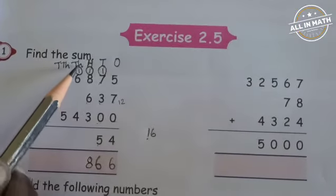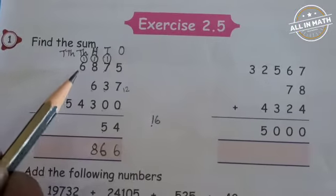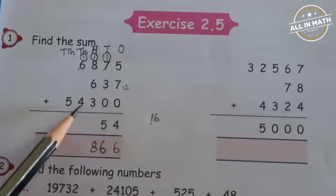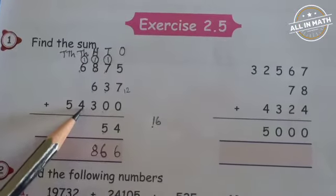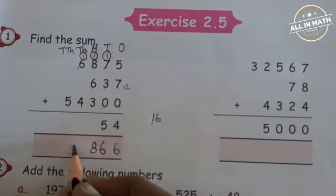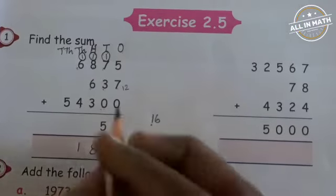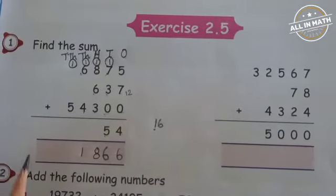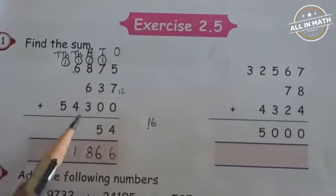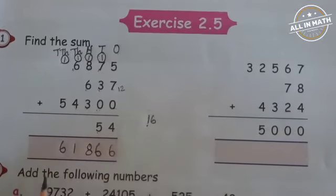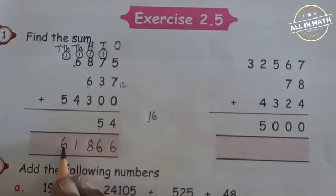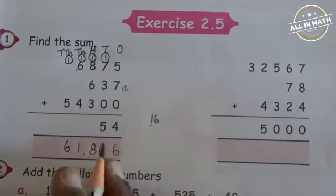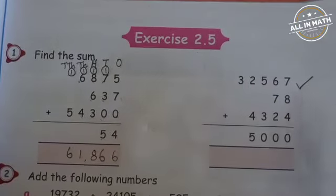Now, add the numbers in the 1000's column: 1, 6, 4. What is 1 plus 6? It is 7. 7 plus 4? 11. So write 1 in the 1000's place and carry over 1 in the 10,000's place. Now add 1 and 5: 1 plus 5 is 6. The answer is 61,866. Do this sum by yourself, children.